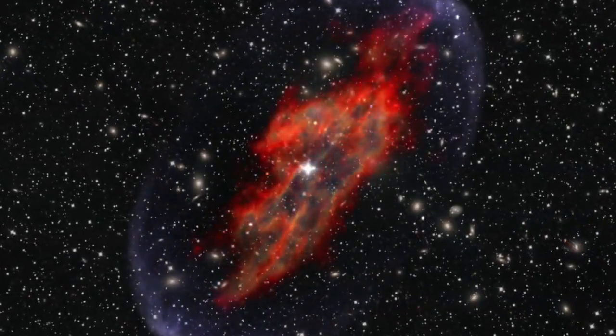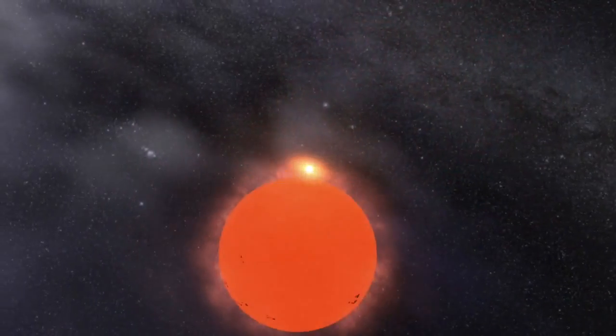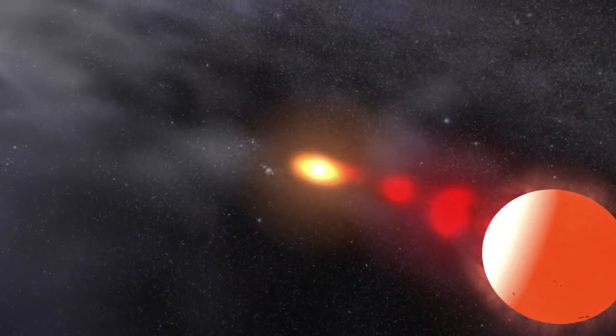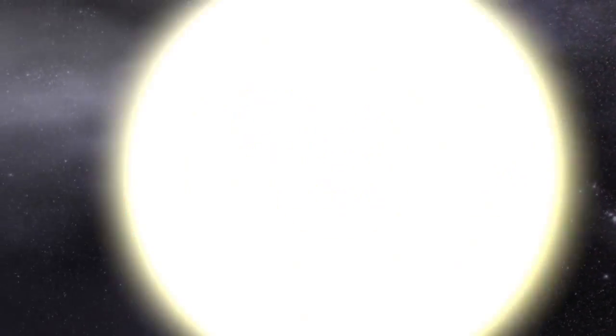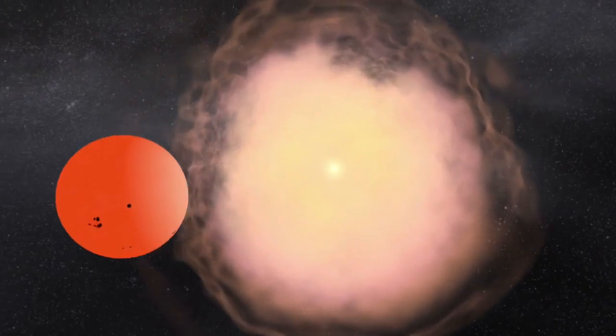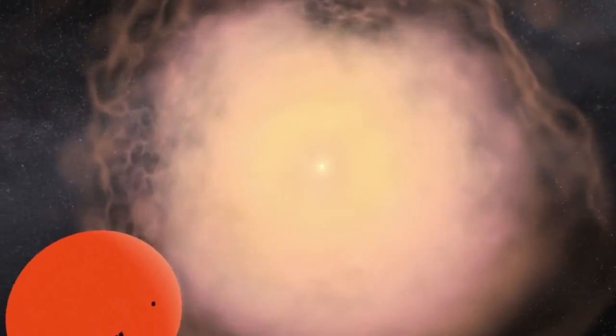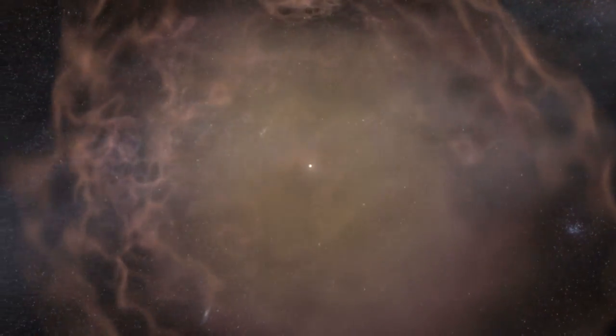Type Ia supernovas are nature's most productive foundries. An old white dwarf star pulls gas off its giant neighbor. The dwarf gains mass until it becomes unstable and blows itself to bits. The explosion creates vast amounts of heavy elements and blasts them into space.